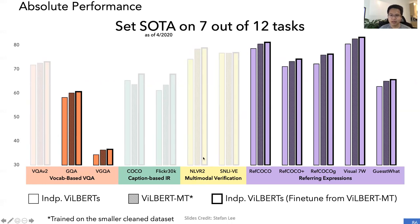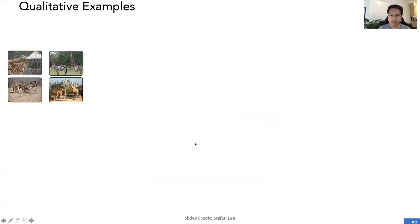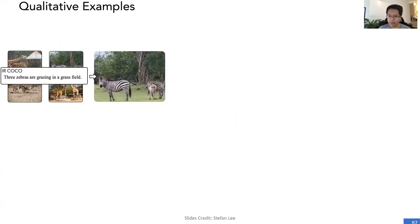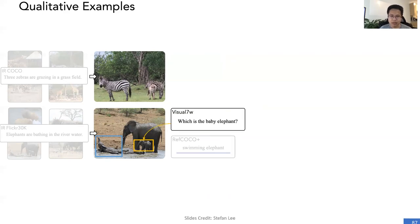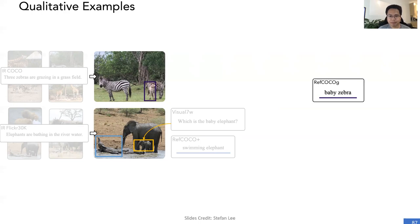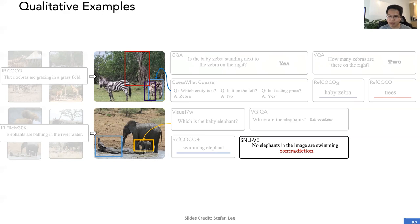Our model sets the new state of the art on seven out of 12 datasets. Here are qualitative examples from the multi-task model: given four images and the caption 'three zebras are grazing in the grass field,' the model retrieves the correct image. Given the RefCOCO+ phrase 'swimming elephant,' the model locates the elephant swimming in the river. Given 'which is the baby elephant,' the model locates the correct region to answer the Visual 7W question. Given 'how many zebras are there on the right of the image,' the answer is two. Given the visual entailment statement 'no elephant in the image is swimming,' the prediction is contradiction — consistent with what the image shows. All predictions are from a single model.